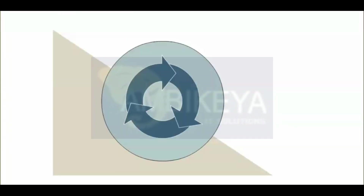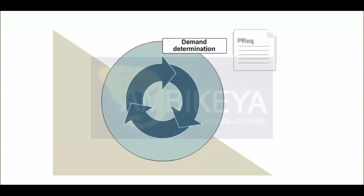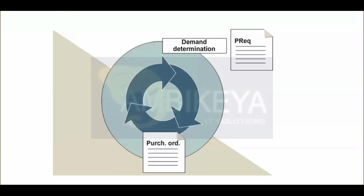The procurement cycle is as follows. Demand determination: the department responsible can register a requirement for materials manually via a purchase order to purchasing. Determining the source of supply: the purchaser responsible is supported by the system in determining possible sources of supply. One possibility for determining the source of supply is creating queries and subsequently entering the quotations. Furthermore, you can access purchase orders and conditions that already exist in the system.